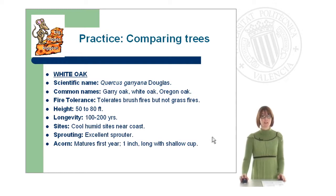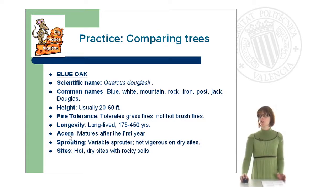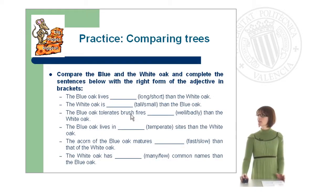Now we are going to do some practice — we are going to compare two types of trees. In the following slides, you have information about white oak and blue oak, including scientific name, common names, height, fire tolerance, longevity, the acorn, sprouting and site. Study this information carefully and then complete the sentences by comparing the blue and the white oak using the right form of the adjective in brackets.